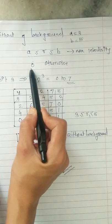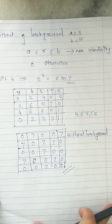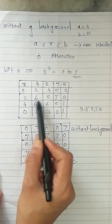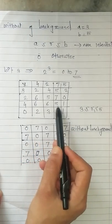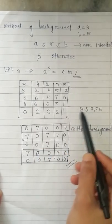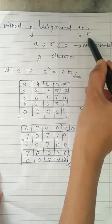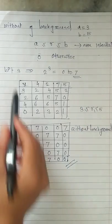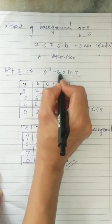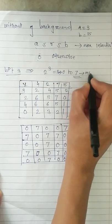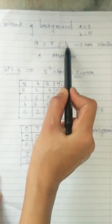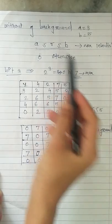Otherwise you are going to keep it as 0. Now consider the input image intensities: 1, 4, 2, 7, 5, 3, 2, 4, 5, 2, 2, 6, 5, 7, 0, 4, 6, 6, 5, 1, 0, 2, 3, 2, 1. Here you have given the values of A and B as A = 3 and B = 5. As it is a 3-bit image, the maximum gray levels are 2 raised to 3, that is 8, which means 0 to 7. Therefore 7 will be the maximum intensity value. So if the intensities belong to this range you are going to replace it with 7; otherwise you are going to replace it with 0.